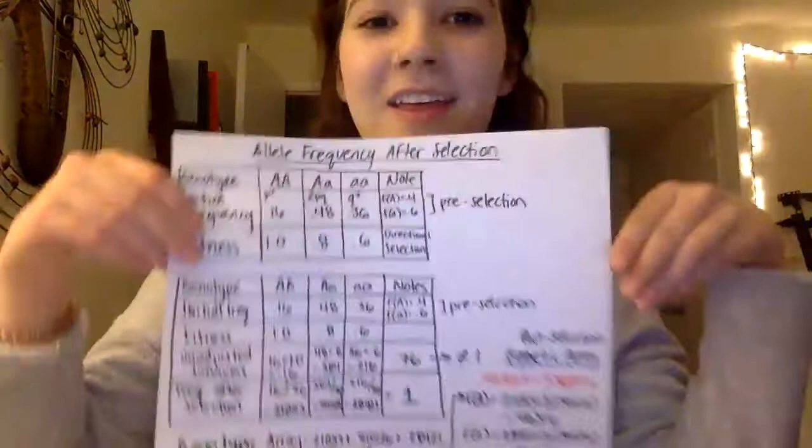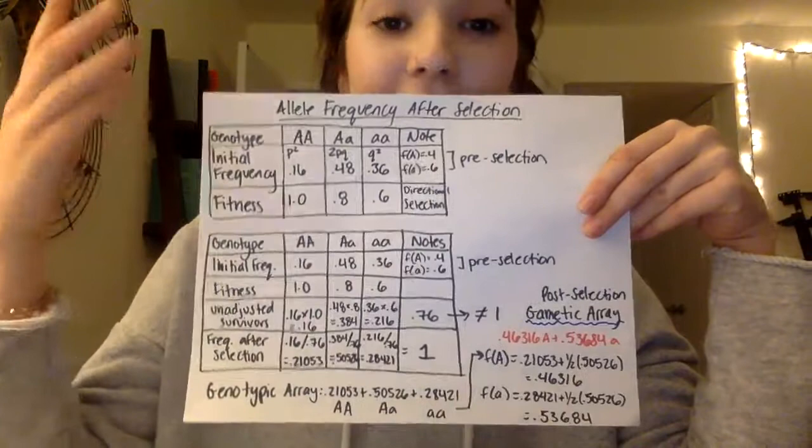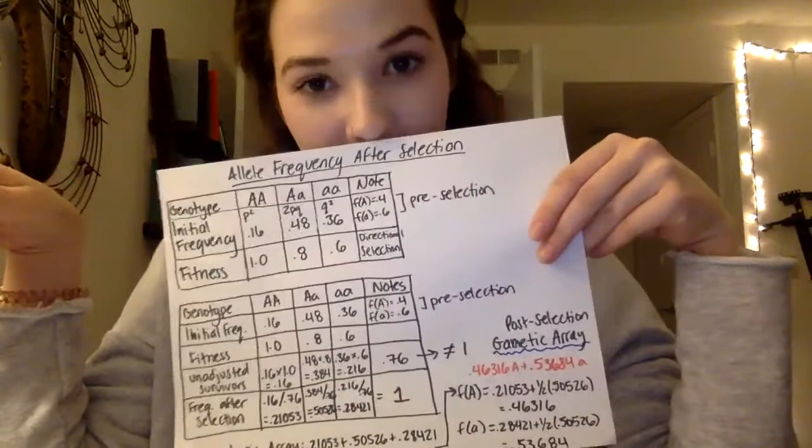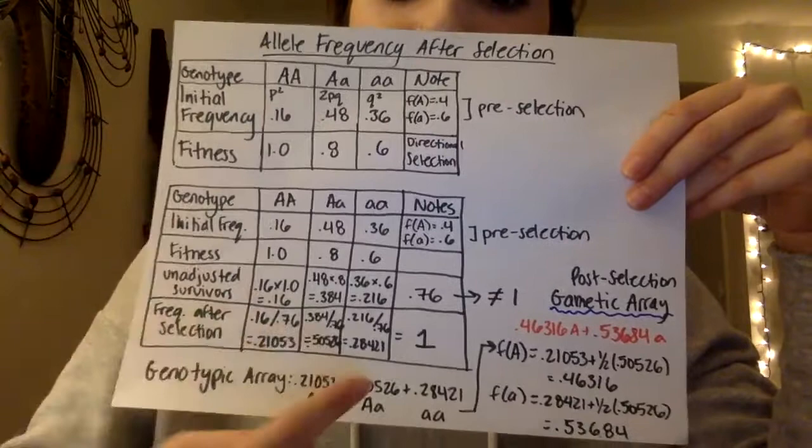However, when the settlers came, everything changed. This was our initial frequency and our fitness level, which was consistent with directional selection. Directional selection started to take place when the long beak colorful birds started to mate with the other long beak birds. We found that the initial frequency started to change — it became higher with the long beaks and lower with the short beak.